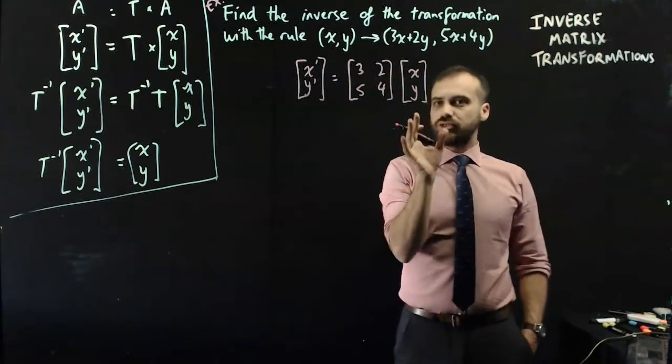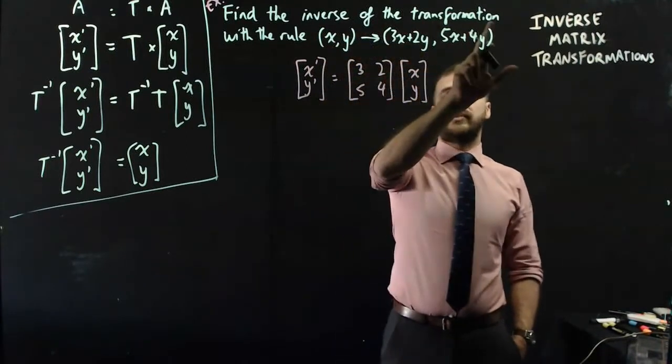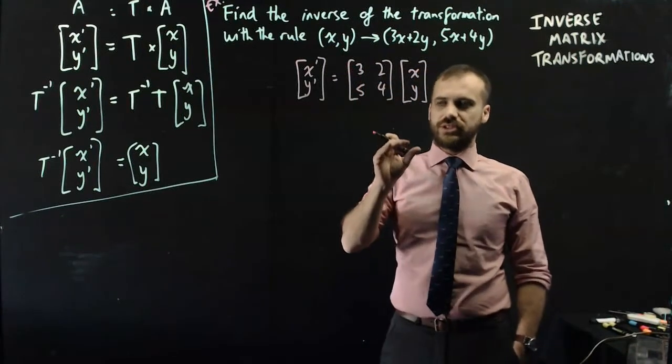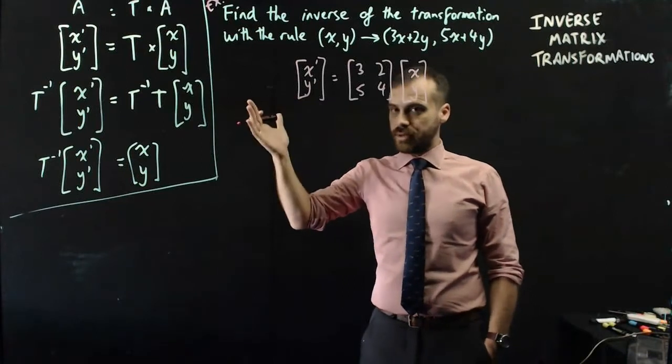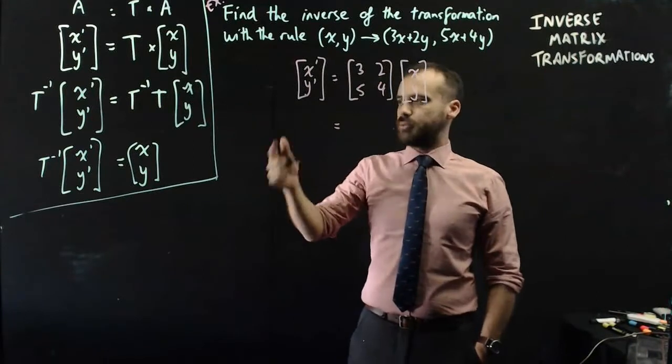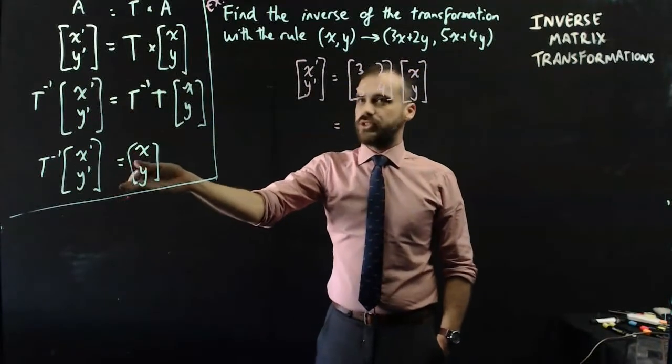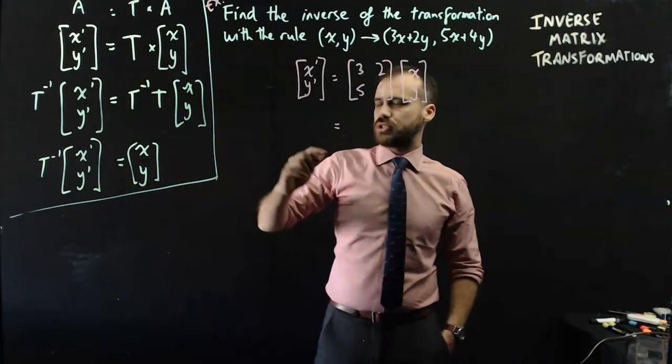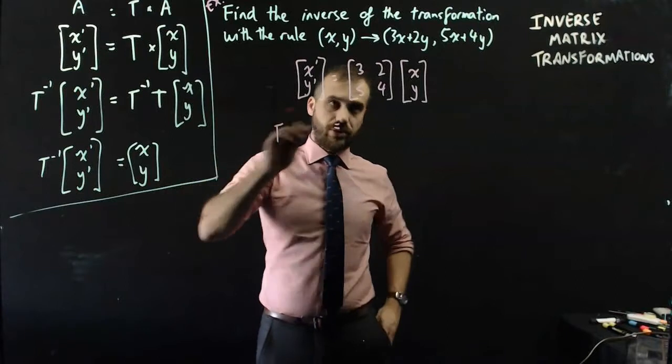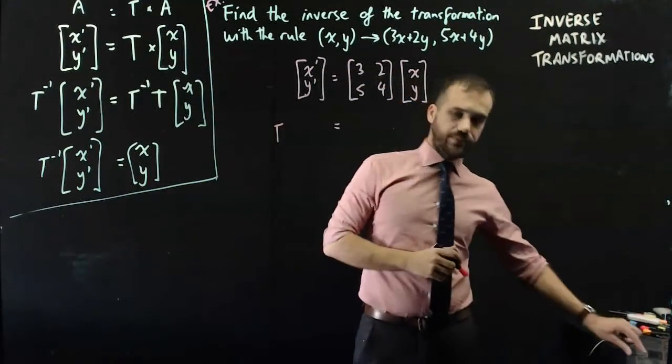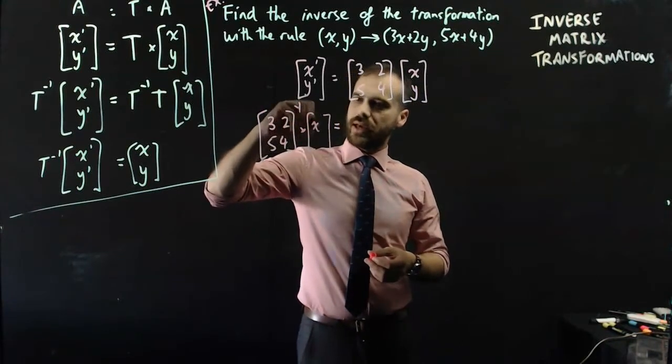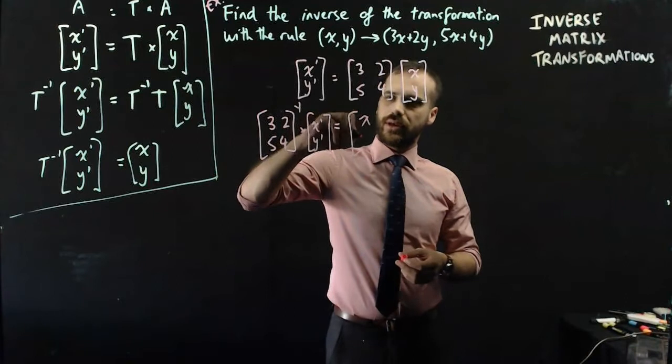Now, what we're trying to find is the inverse of the transformation. So this is the transformation. We're trying to find the inverse of the transformation. The thing that you would do to take an image and move it back into the object. So we can rearrange this formula in the same way that we rearranged that formula. I'll just skip the middle two steps and jump straight to the last step. t negative 1, so whatever that is to the negative 1. 3, 2, 5, 4 to the negative 1 times x dash y dash equals x y.